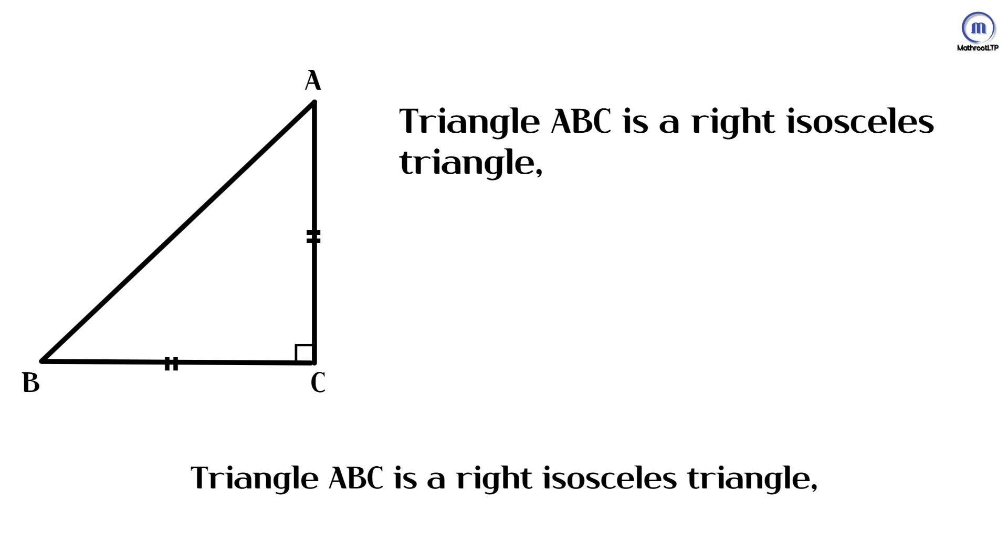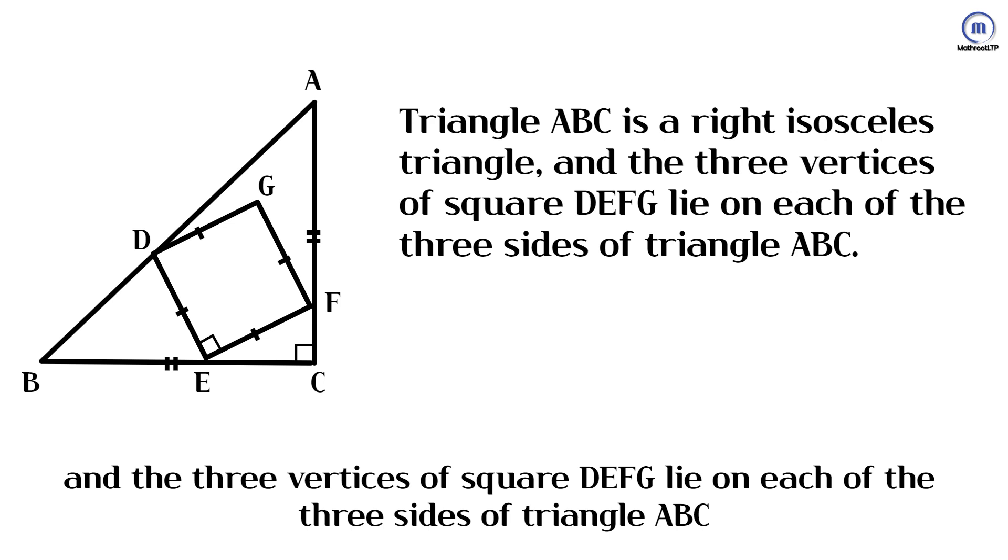Triangle ABC is a right isosceles triangle, and the three vertices of square DEFG lie on each of the three sides of triangle ABC.